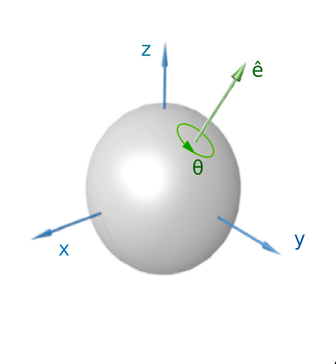The quaternion can be related to the rotation vector form of the axis-angle rotation by the exponential map over the quaternions.